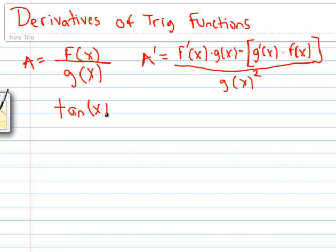Tangent of x. Now let's say I want to derive this, but I really have no idea how I would just take the derivative of tangent of x. So what we can do is we can rewrite this as sine of x over cosine of x. So here is our f of x, and here is our g of x.